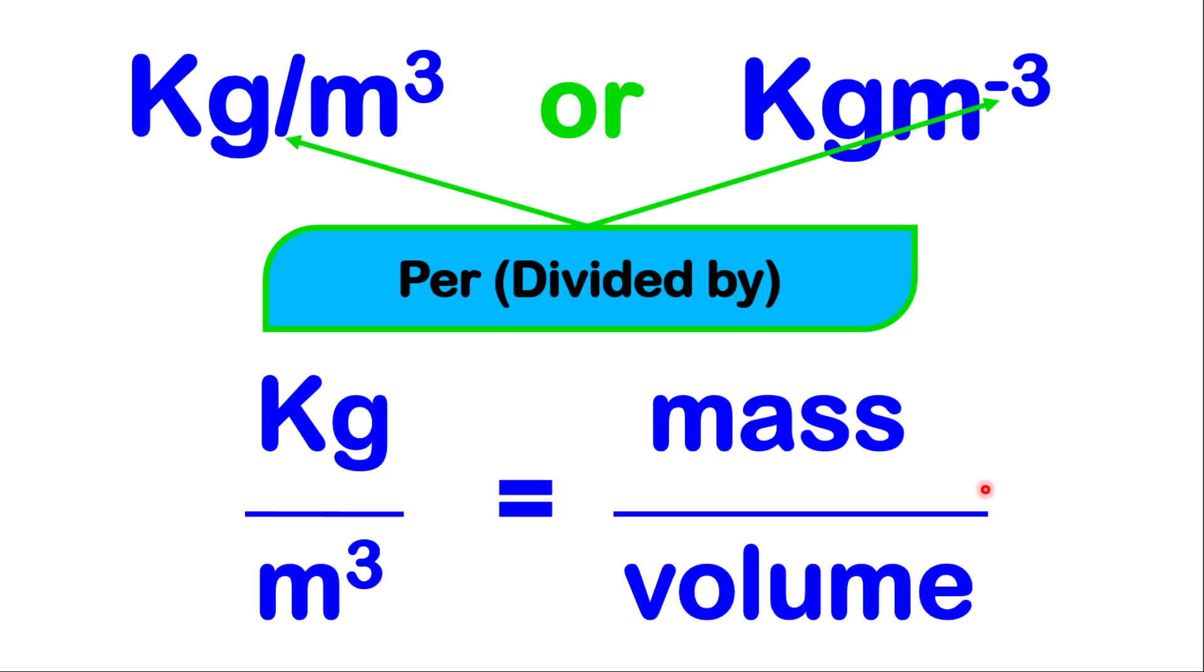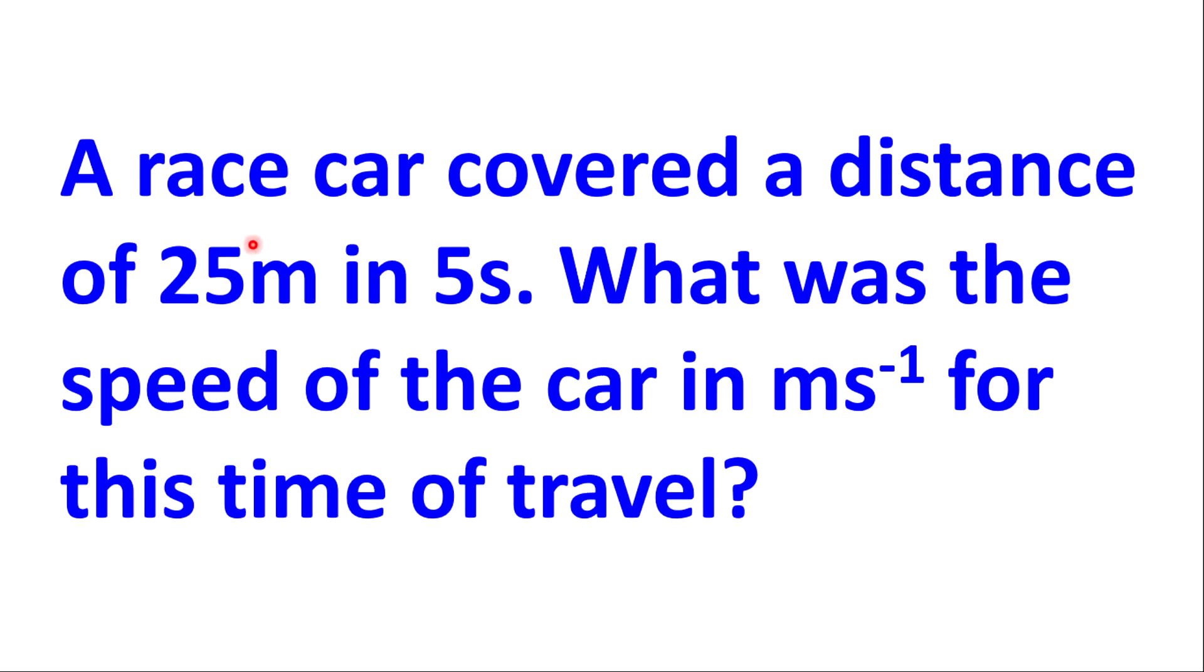Now, let us use this concept to answer the questions I showed earlier. Let us look at the first question. A race car covered a distance of 25 meters in 5 seconds. What was the speed of the car in meters per second for this time of travel? First to note, you must identify the important values and units. So there are three in this one, the 25 meters, the 5 seconds, and the meters per second, which is the unit that they want our answer to be expressed with.